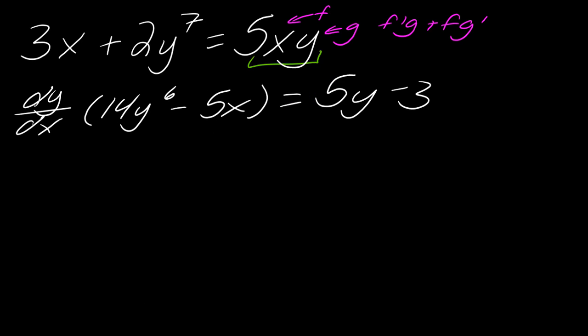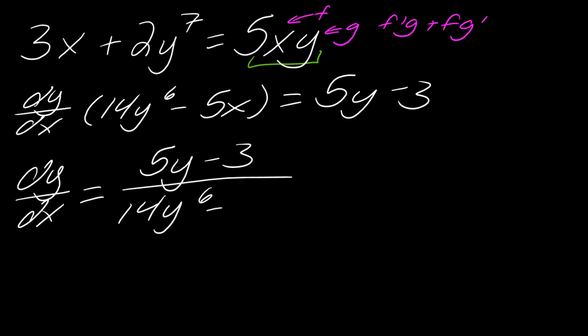So now I can really just divide by this 14y to the 6 minus 5x, so I'm left with dy dx equals 5y minus 3 over 14y to the 6 minus 5x. And so then that's it. There's our answer.